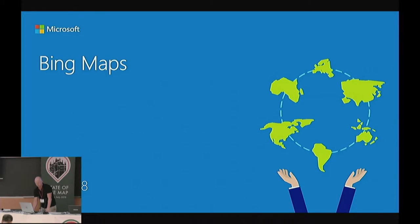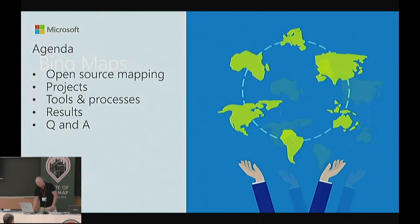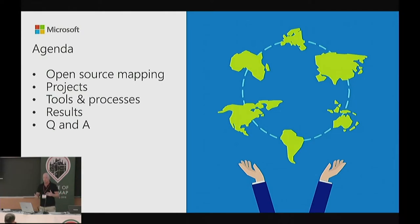Good afternoon, everyone. Thanks a million for coming by. My name is Ossian. I've been working with the Open Maps team over at Microsoft trying to improve the base map for OpenStreetMaps. What we'll talk about today is open source mapping in general with the editorial team, some of the projects we've been working on, some of the tools we've used, the processes we've put in place, and some of the results we've seen up until now.